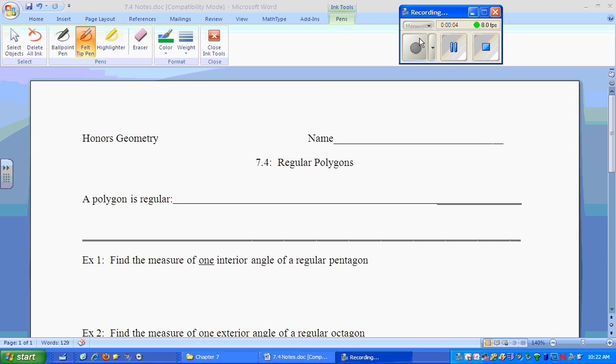Good evening. This is Mr. Bogaisky. 7.4 notes. We are looking at regular polygons. We're going to start with a joke. Joe, what did the acorn say when it grew up? Gee, I'm a tree.